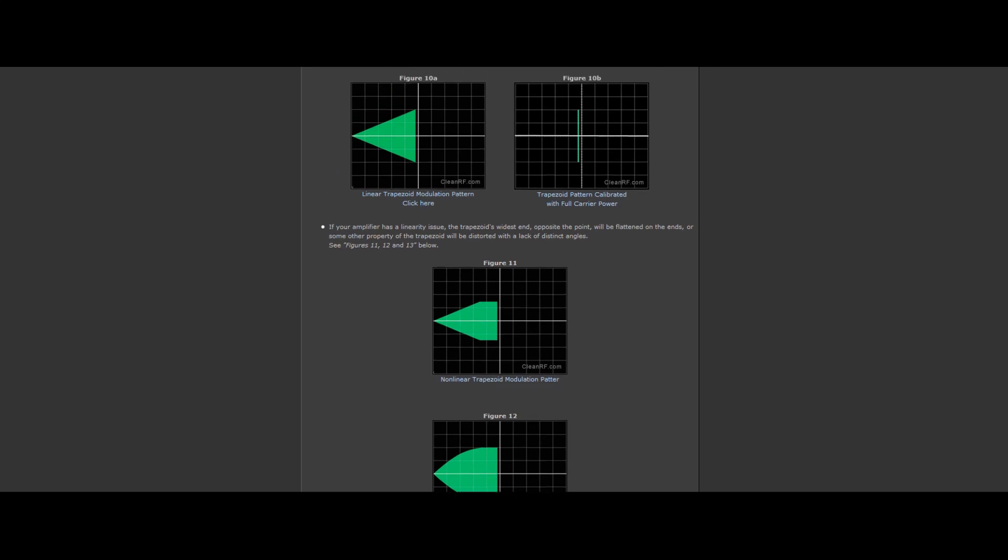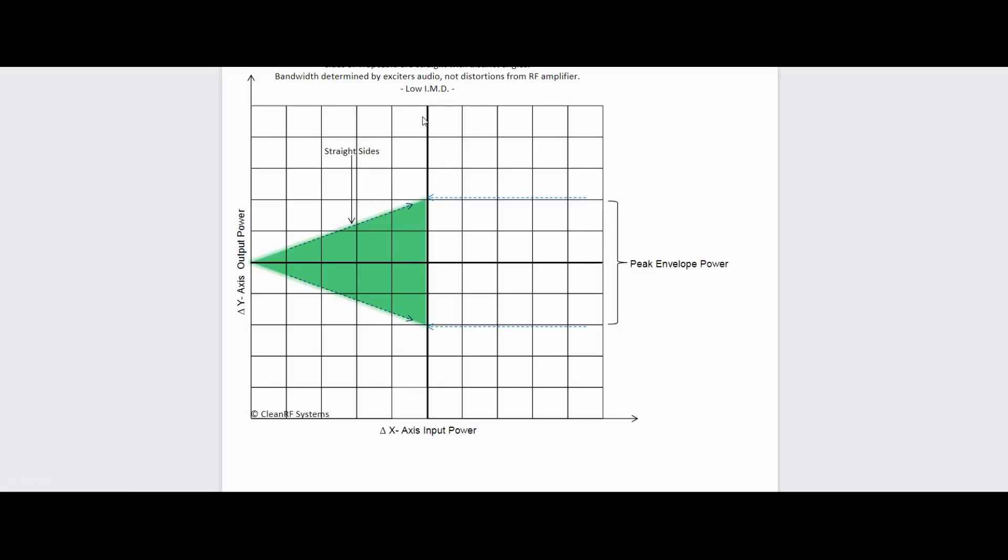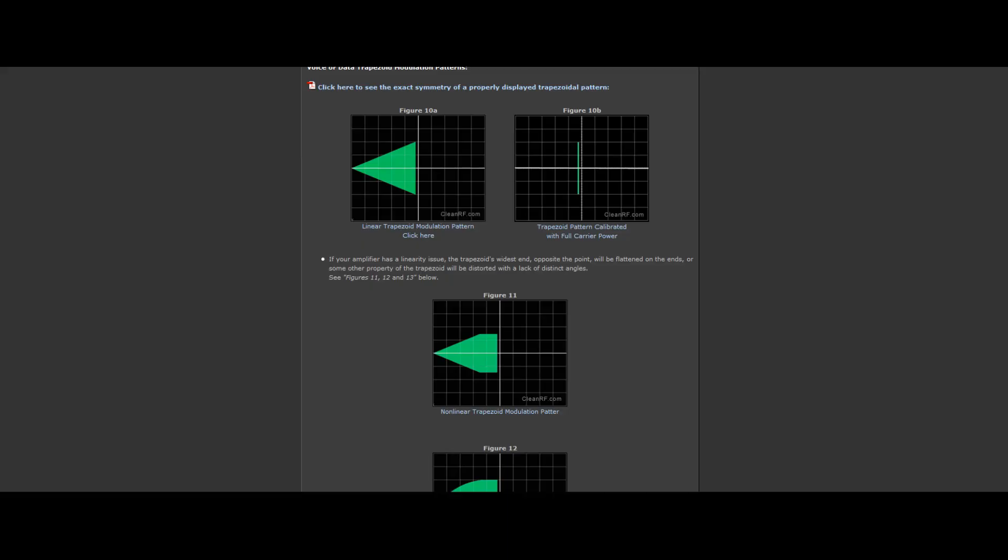I have a little diagram here that is a conceptual illustration of the trapezoid. And you can see here we have the straight lines on the sides, we have the input power on the horizontal, and we have the output power on the vertical. And together they generate a good-looking pattern.